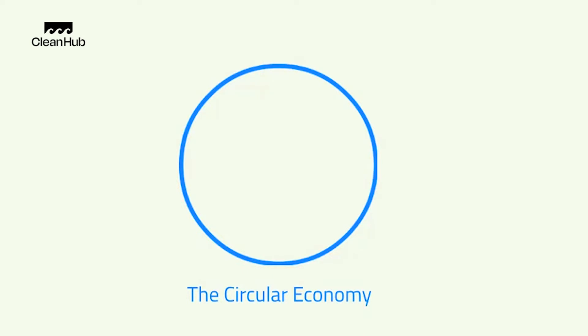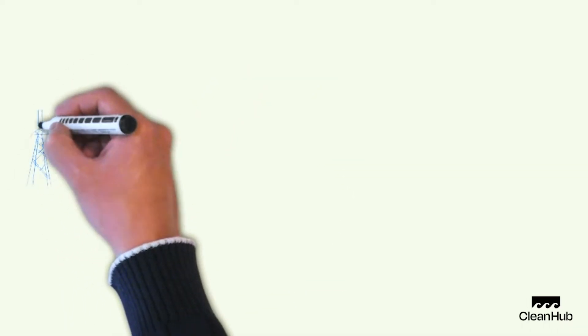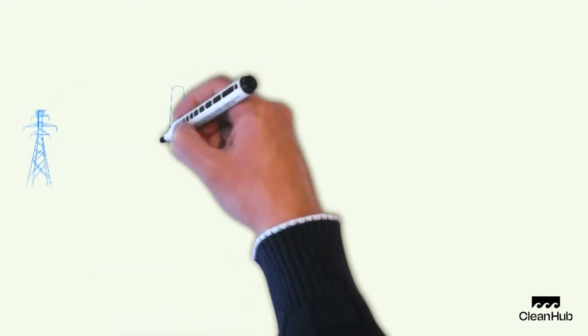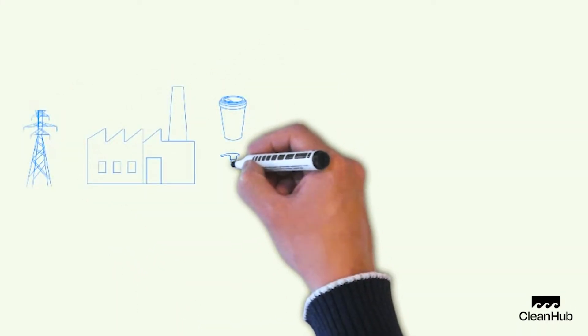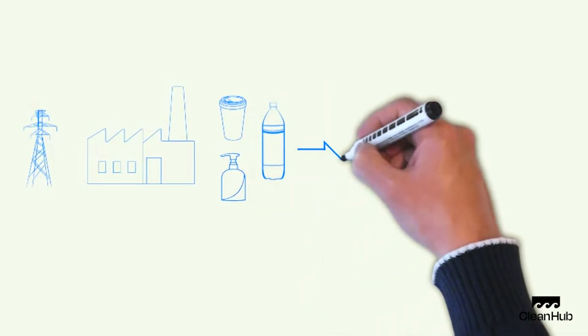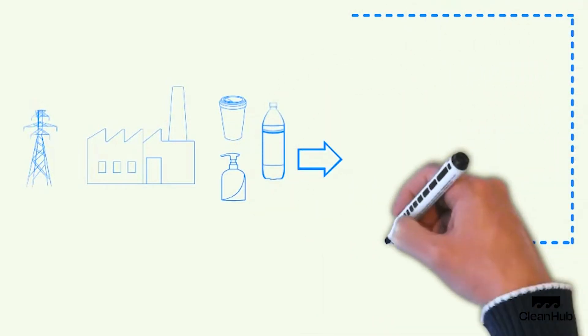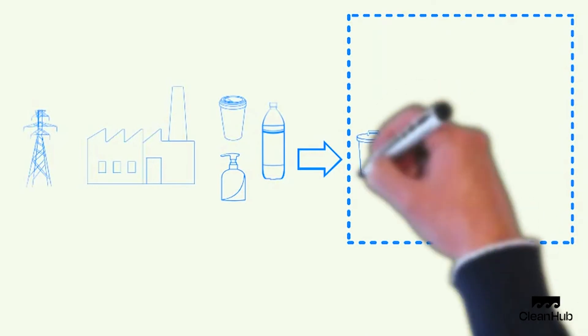This is how the world is now. This is how things work. We use energy and raw materials to make stuff and that stuff gets bought and consumed. If we're lucky the waste that gets created then goes into a waste management system where it's collected, sorted and responsibly handled.